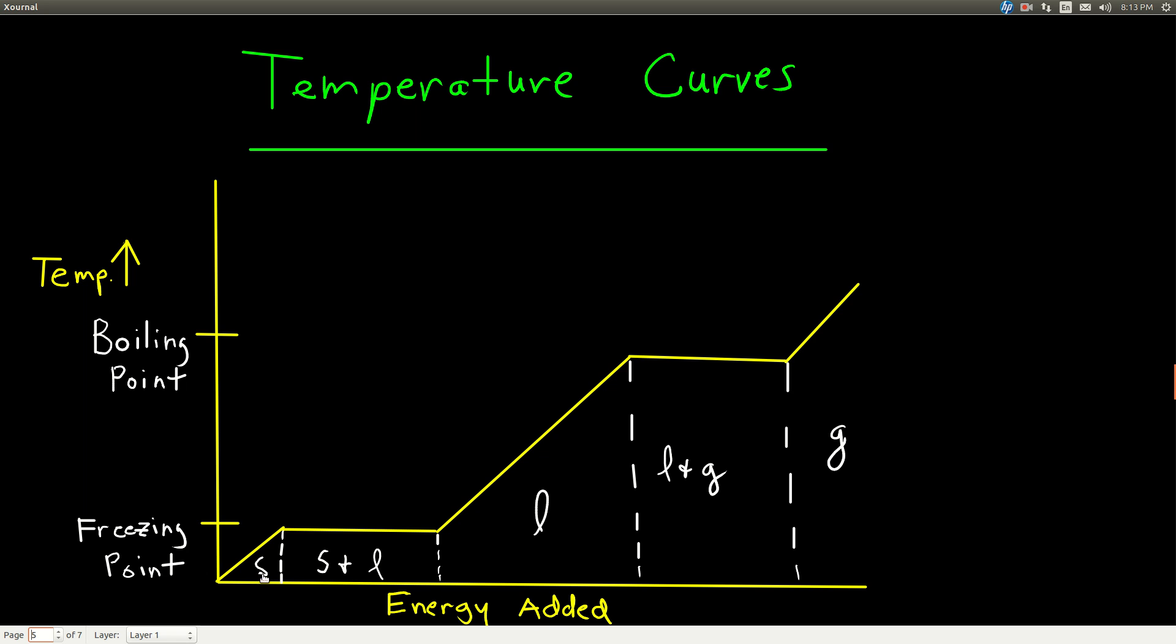In a heating curve, you're adding energy, and the temperature's going up. If we were to draw a cooling curve, it's the same thing, only it's going the other way. You take energy out, and the temperature decreases.